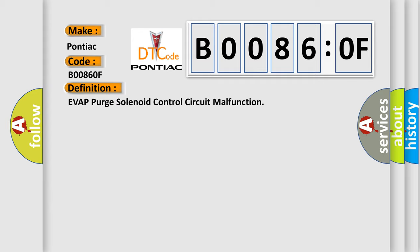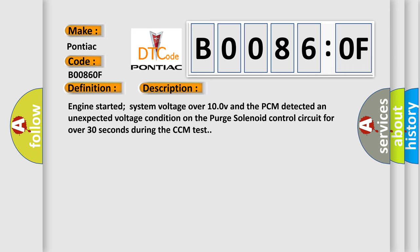And now this is a short description of this DTC code: Engine started, system voltage over 10V, and the PCM detected an unexpected voltage condition on the purge solenoid control circuit for over 30 seconds during the CCM test.